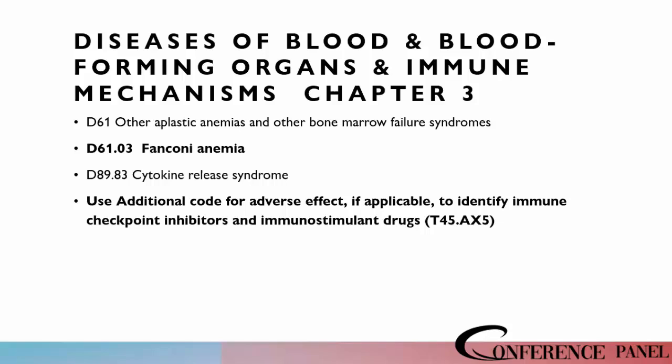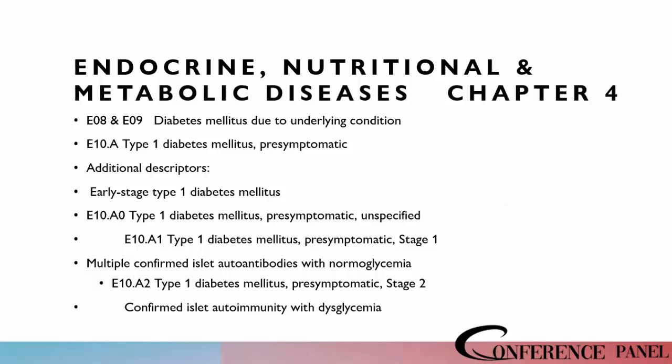In the diseases of blood and blood-forming organs and immune disorders, we've got one new code in this chapter: D61.03 for anemia. We also have new codes that are in the arena of diabetes.